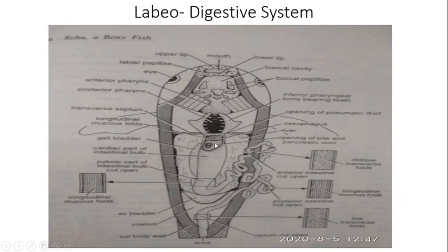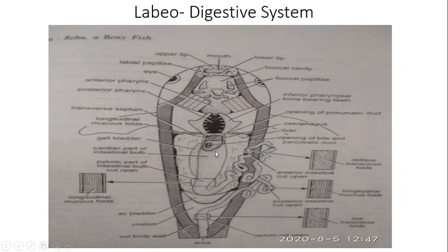This is the cardiac part of the intestinal bulb, and the opening of the pneumatic duct is shown here. The stomach is absent, and the esophagus is continuous into the intestine behind. The esophagus opens into the intestinal bulb. The opening of the esophagus into the cardiac part of the intestinal bulb is guarded by an esophageal valve to prevent regurgitation of food.